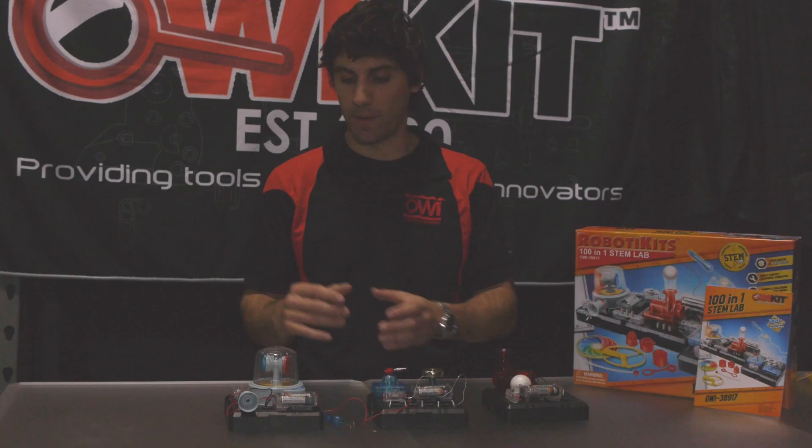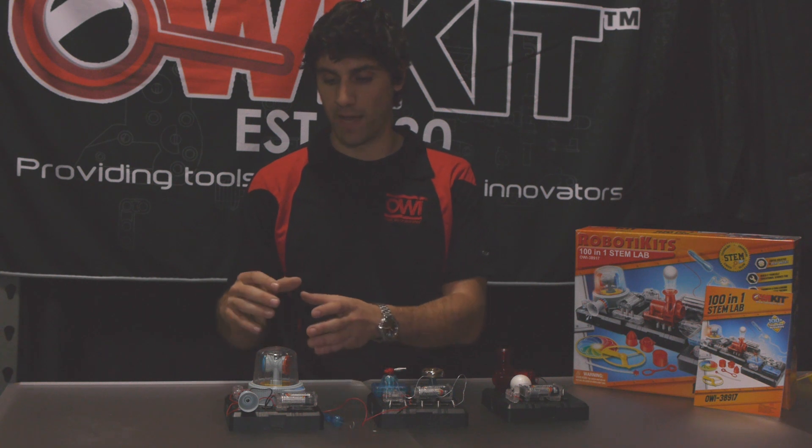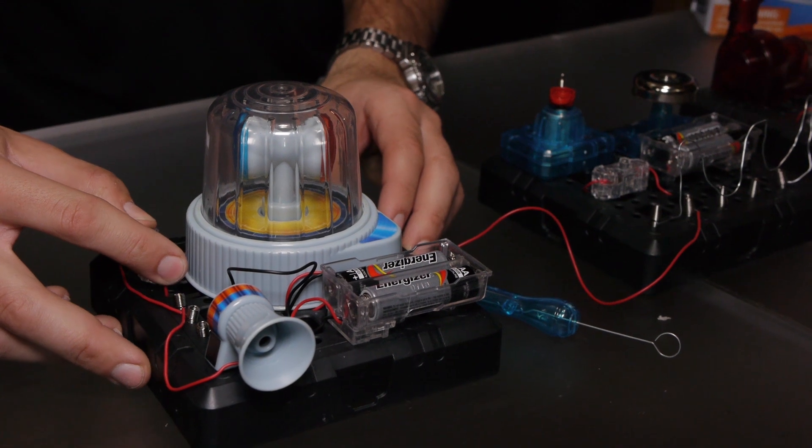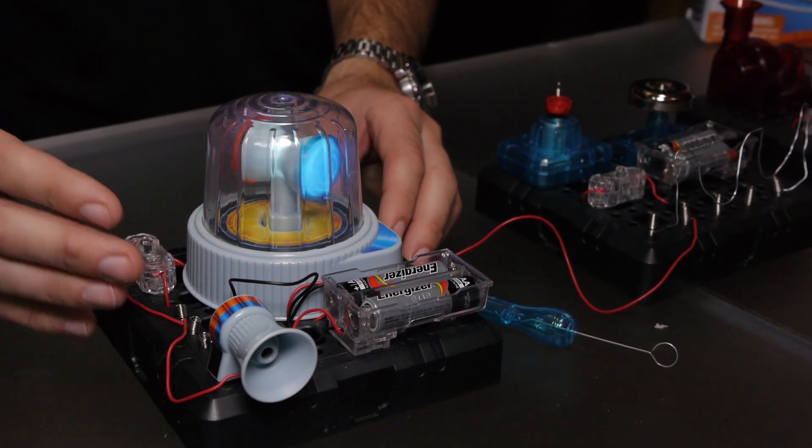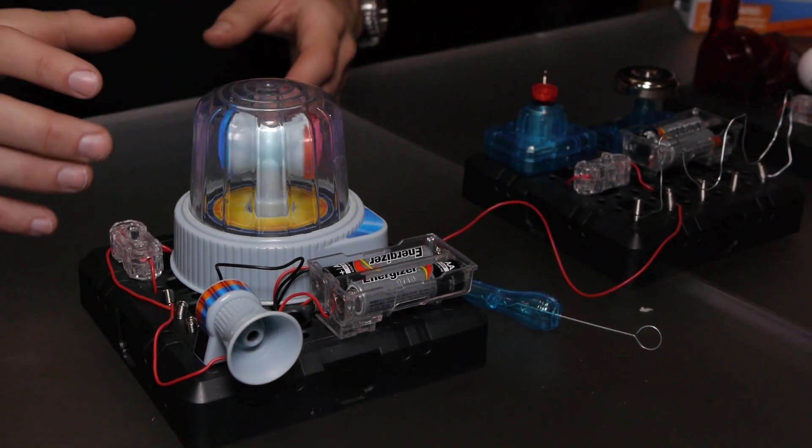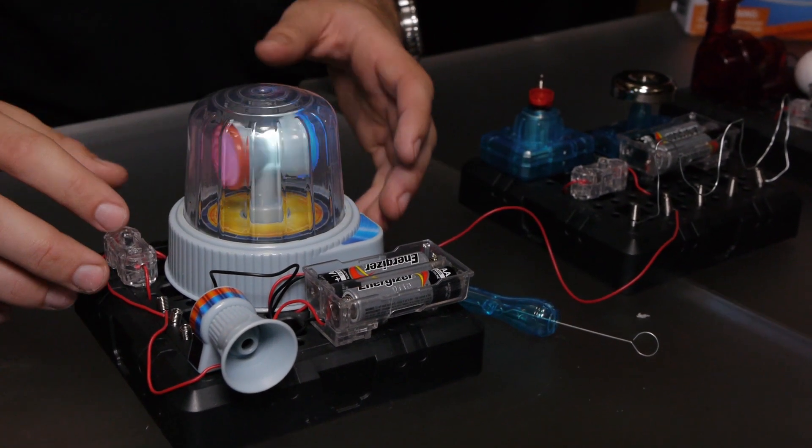The alarm system has an audio and light show. Once you flip the switch on, you get sound from the blow horn and a light show inside the glass dome.